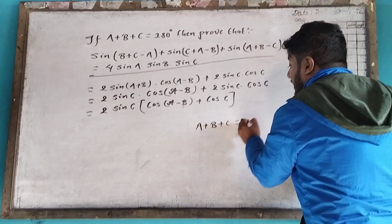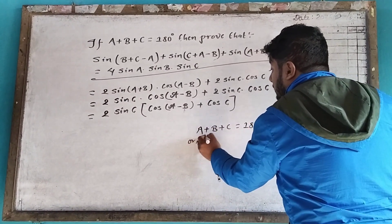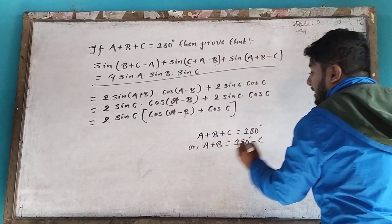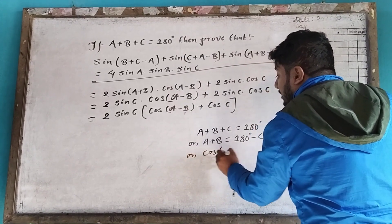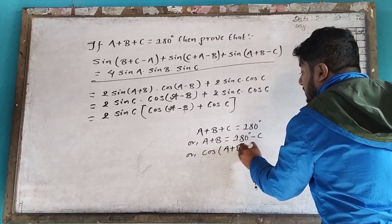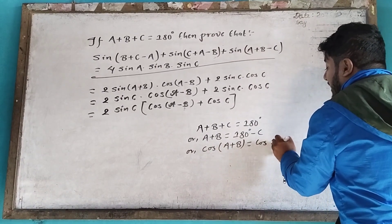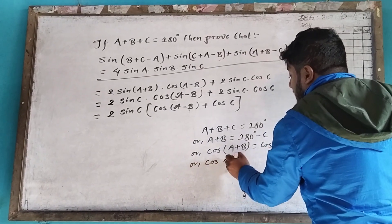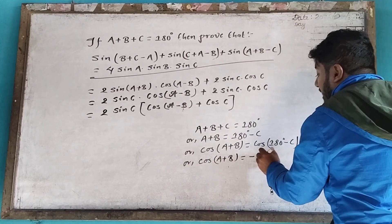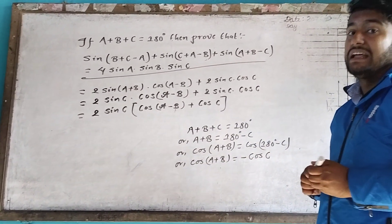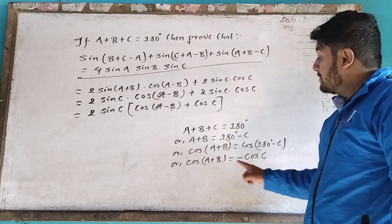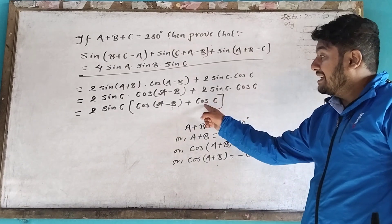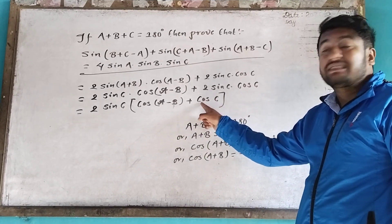A plus B plus C equal to 180 degrees, or A plus B equal to 180 degrees minus C. This is what we're talking about: A plus B equals 180 degrees minus C. Therefore sin(A+B) equals sin(C).